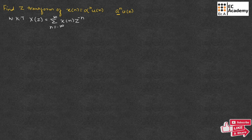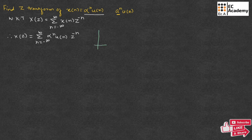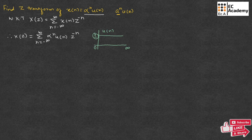In this formula, in place of x(n), let us put alpha to the power of n times u(n). Therefore, X(z) equals the summation from n equals minus infinity to infinity of alpha to the power of n times u(n) times z to the power of minus n. We know that u(n) equals 1 for n ranging from 0 to infinity, and 0 from minus infinity to 0.